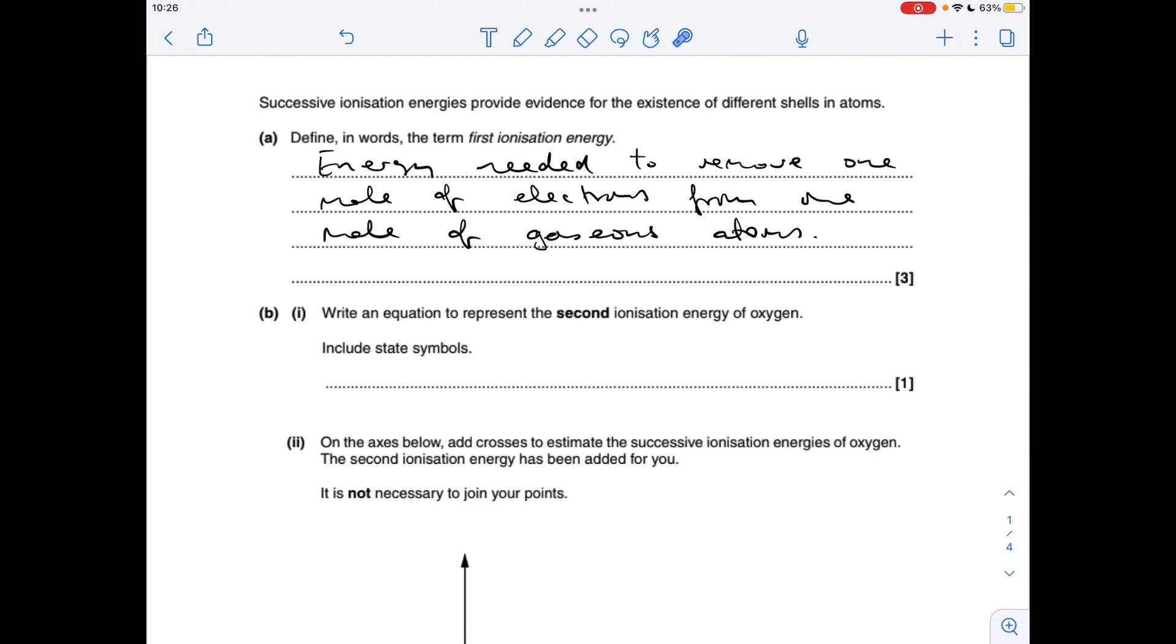Okay so part A, the definition for first ionisation energy is the energy needed to remove one mole of electrons from one mole of gaseous atoms. We can't use an equation in this one because it asks for the definition in words.